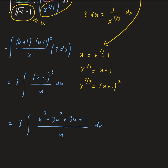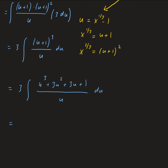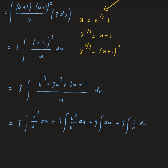We simplify by dividing each term in the numerator by u, giving us 3 times the integral of u cubed over u du, plus 9 times the integral of u squared over u du, plus 9 times the integral of du, plus 3 times the integral of 1 over u du.